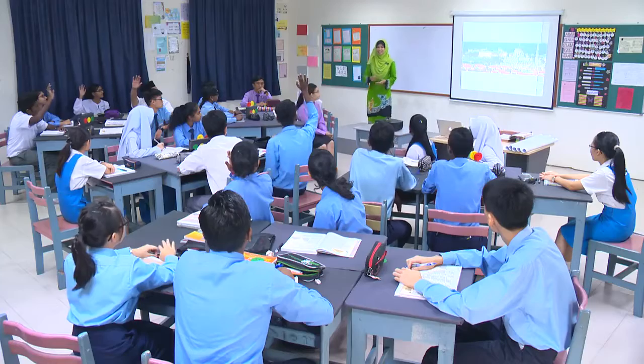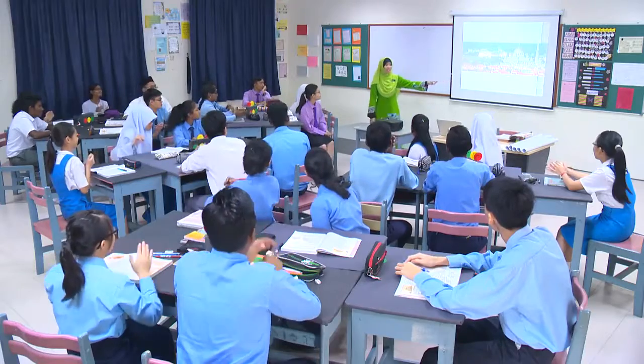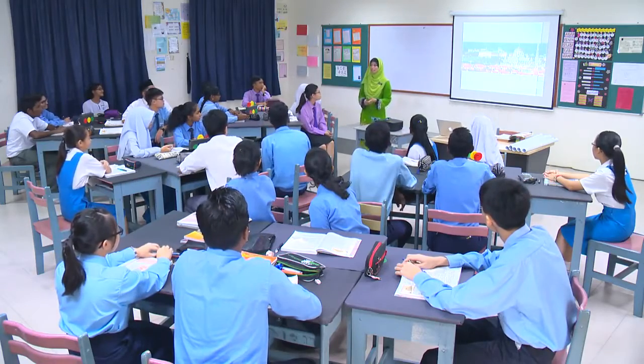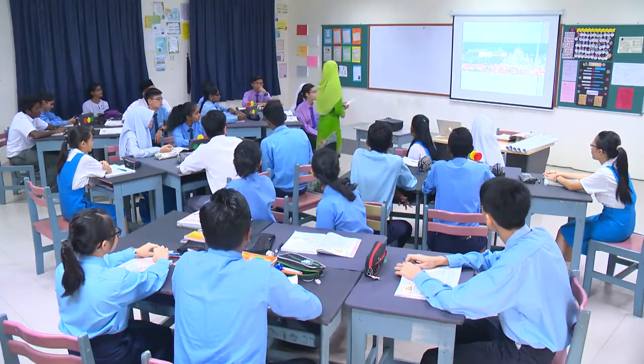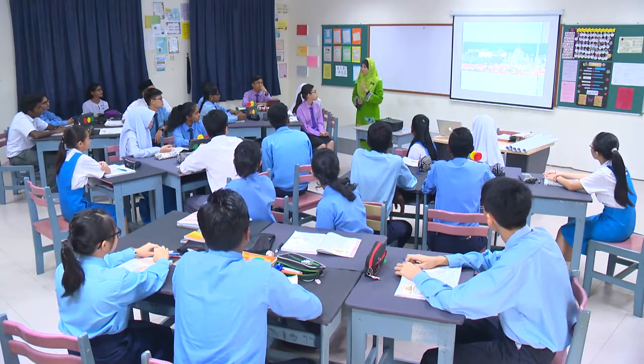Selain itu, ada apa-apa lagi yang kita boleh lihat daripada gambar ini? Ya, Roshan. Terdapat juga rumah ibadat dan juga pusat pentadbiran pada gambar tersebut. Ya, beri tepukan kepada Roshan. Tahniah. Memang betul, kelas. Bandar Putrajaya merupakan salah satu bandar terancang, ilham daripada mantan Perdana Menteri kita iaitu Tun Dr. Mahathir. Bandar Putrajaya memang sangat lengkap kerana selain bangunan pentadbiran, terdapat juga rumah ibadat, kawasan perumahan, kompleks, dan pusat rekreasi.